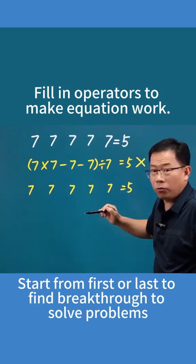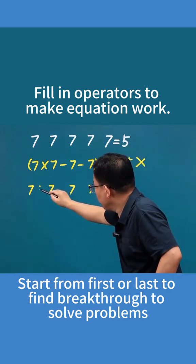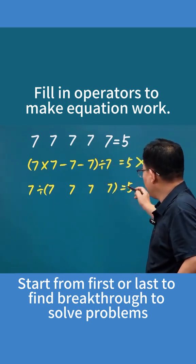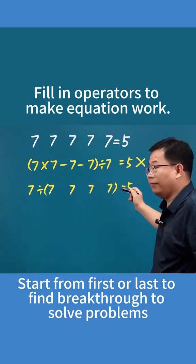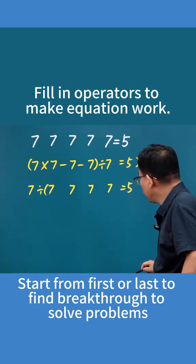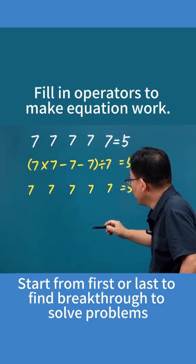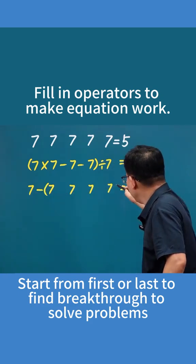Alright, if we try breaking through from the beginning, then either 7 divided by a number equals 5. 7 divided by what equals 5? That doesn't work. It's not an integer, so division won't work. That means we have to use subtraction.